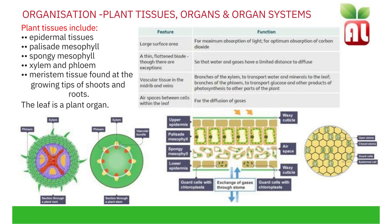Organisation in plants. Plant tissues include epidermal tissues, palisade mesophyll, spongy mesophyll, the xylem and the phloem, and meristem tissue found in the growing tips of shoots and roots. The leaf is an example of a plant organ.